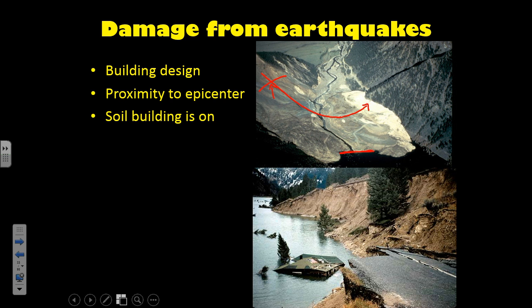They were worried that Quake Lake was going to cause flooding downstream, so the Army Corps of Engineers came in and dug out a channel to let that water out, safely releasing it. You can actually go back and visit — they have a visitor center there. The image on the bottom shows the road where it collapsed, one of the houses that fell into that brand new lake, and all the trees sticking out of Quake Lake.